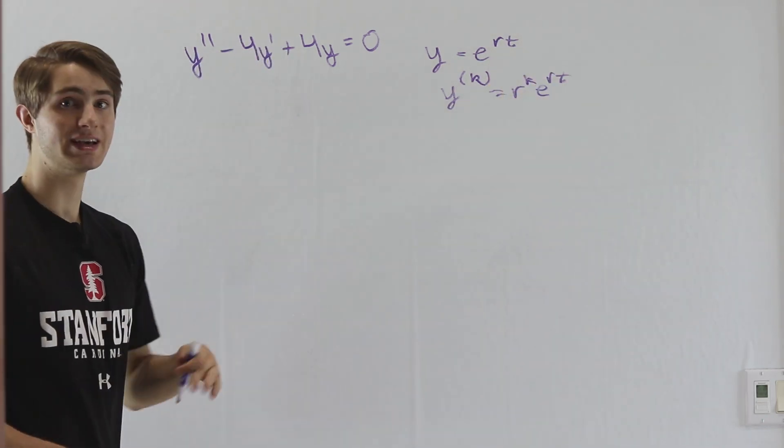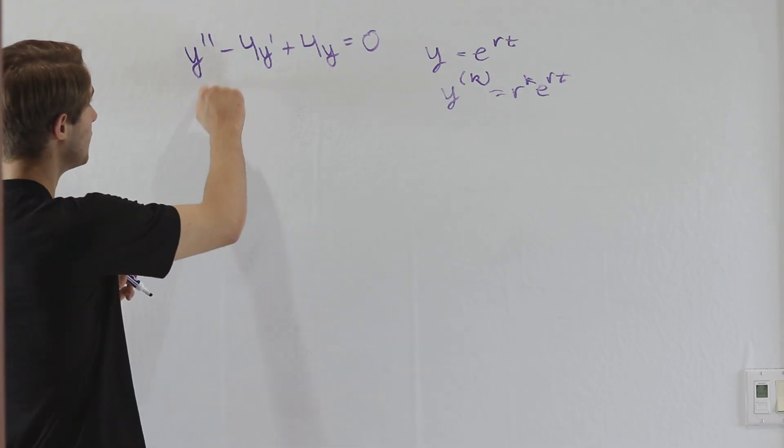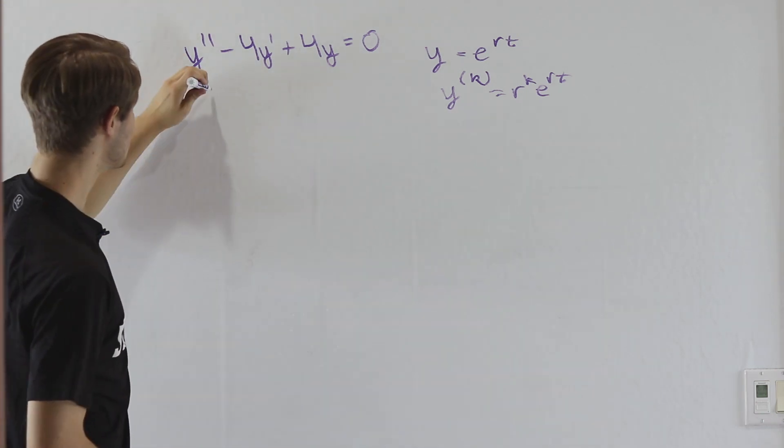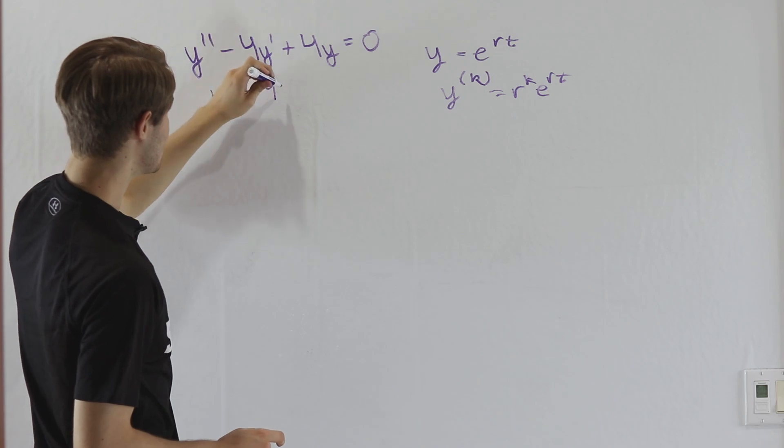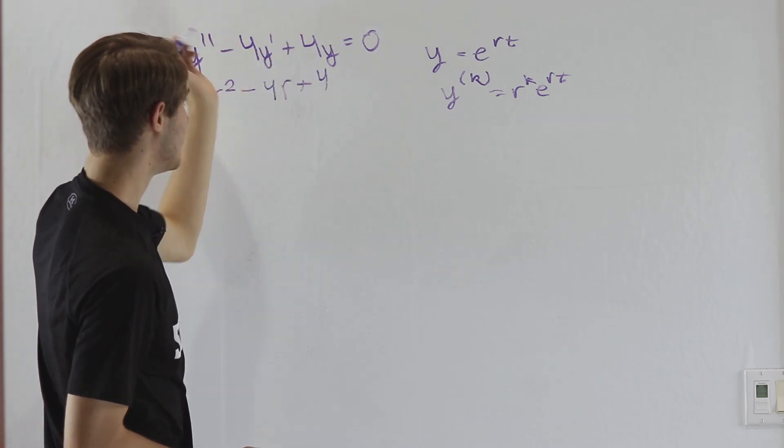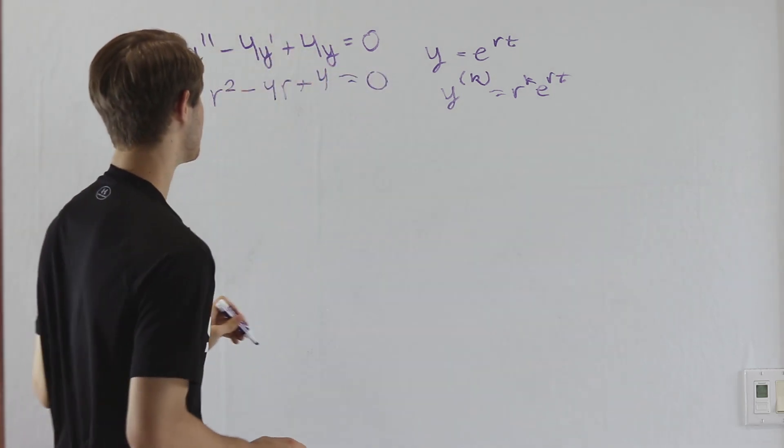So if we plug that in here to get our characteristic equation, y double prime, the second derivative, will become r squared. Y prime will just become an r and then y will not have any r's at all, and that equals zero.